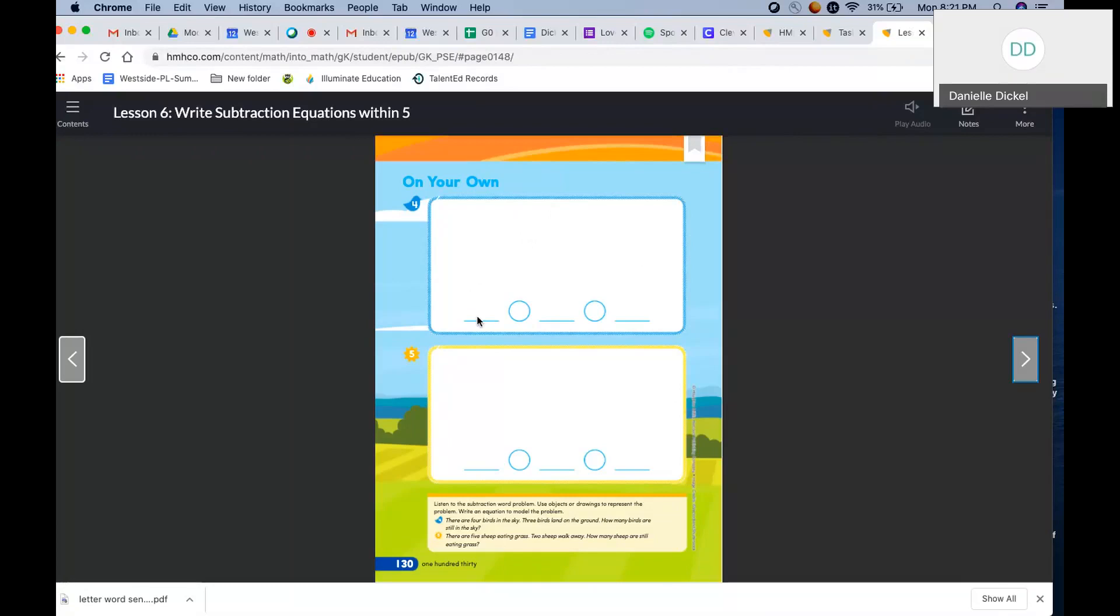Three birds land on the ground. So four are in the sky. Three birds land on the ground. How many birds are still in the sky? So if we had four birds, we cross out three because they landed on the ground. Four minus three equals how many birds are still in the sky? Four minus three equals one. There is one bird left in the sky.